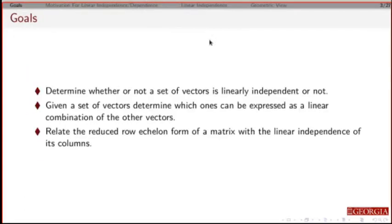So in terms of our goals when this is done, you should be able to take a set of vectors and decide whether or not they're linearly independent or linearly dependent. If I give you a set of vectors, you should be able to figure out which ones you can write as a linear combination of the others. And finally, you should be able to relate how we're using row echelon form of a matrix to determine whether or not a set of vectors are linearly independent.